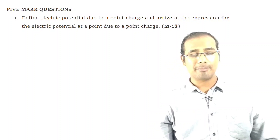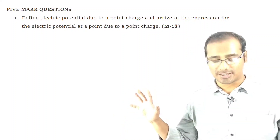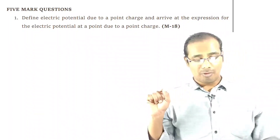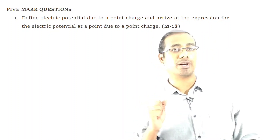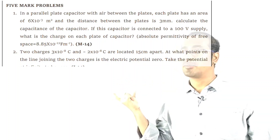For 5 marks, chapter 2 important theory question: define electric potential due to a point charge and arrive at the expression for electric potential at a point due to a point charge — derive that. According to probability, chapters 1 and 2 alternate: if chapter 1 has 5 marks theory, chapter 2 has 5 marks numerical, and vice versa. Maximum chances are for the 5 marks problem in chapter 2.